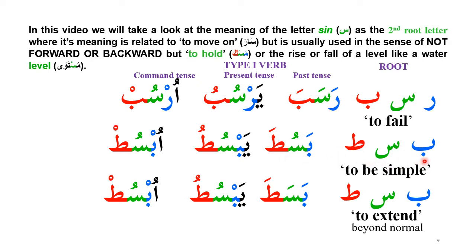'Basit' means simple, where Ya after Seen indicates comparison between two things. But 'Basata' means to extend — in a bar-like container, the level you add is not very much. The Tha is important here because 'to extend' has many words in Arabic. 'Basata,' as in the Quranic phrase 'Yapsutu Riziska Limayashau,' means to extend beyond what is normal. Tha indicates the normal or correct level, and to extend beyond that is 'Basata.'